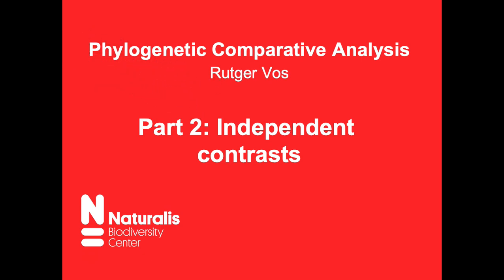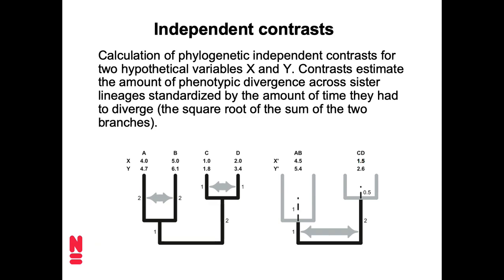So what are we supposed to do? Well, let's start with the first major method that tried to deal with this and therefore deal with the effect of phylogeny. And that method is known as independent contrasts or phylogenetic independent contrasts. This is Felsenstein, 1985.